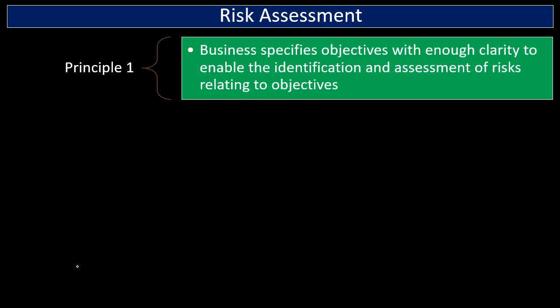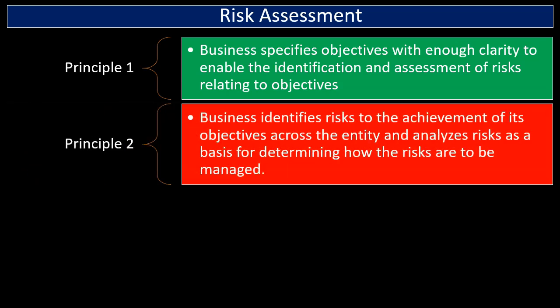Next we'll take a look at principles related to risk assessment. Principle number one: the business specifies objectives with enough clarity to enable the identification and assessment of risks related to objectives. We need to know exactly what the objectives are so that we can identify the risks. The clearer we are about that, the more clearly we can assess those risks and take action.